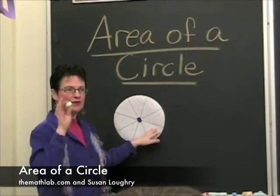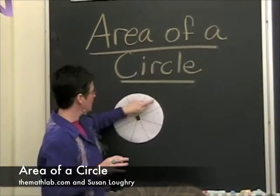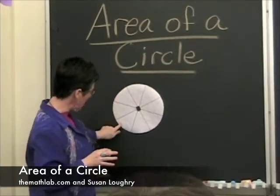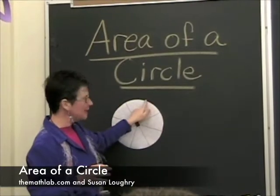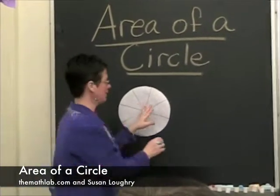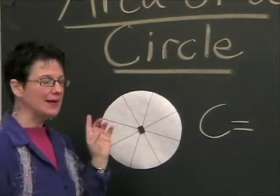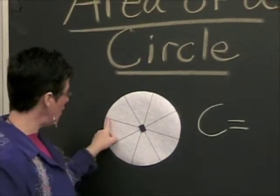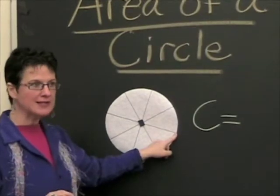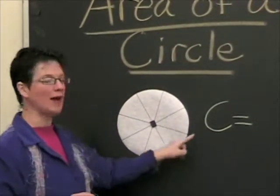Before we begin, we have to review briefly. The distance around a circle is called its circumference, and it's always denoted with a capital C. Now it turns out that if you know how far it is across the circle, you can always find the distance around.